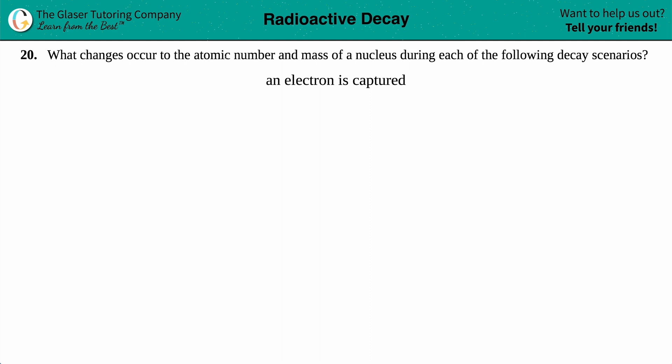Number 20, what changes occur to the atomic number and the mass of a nucleus during each of the following decay scenarios? And then we have an electron is captured.